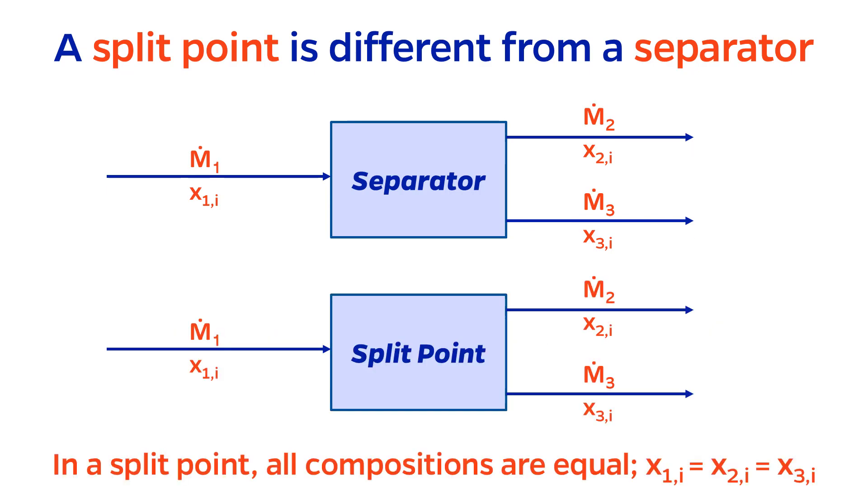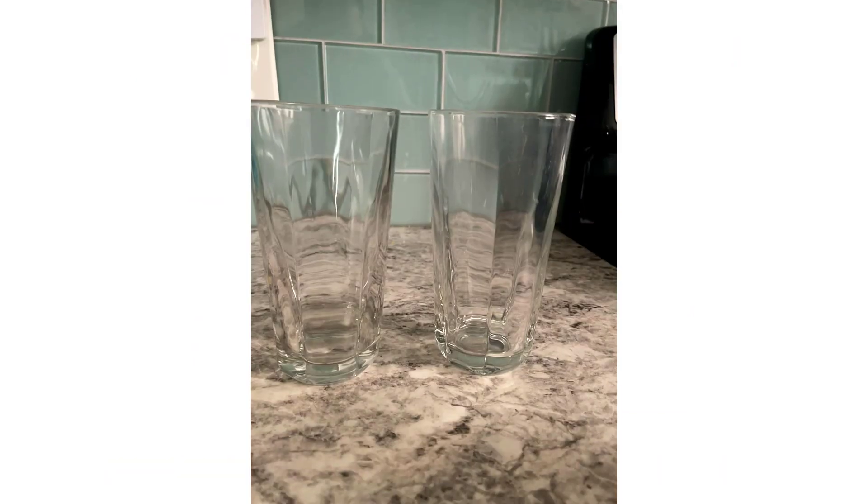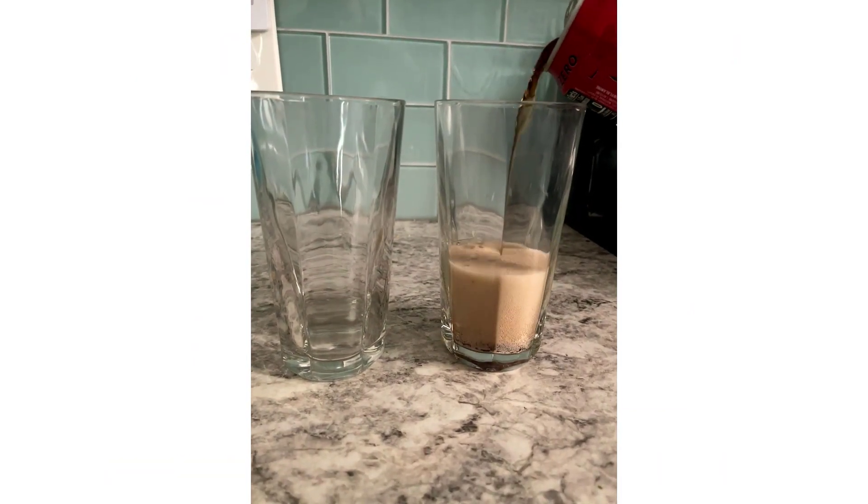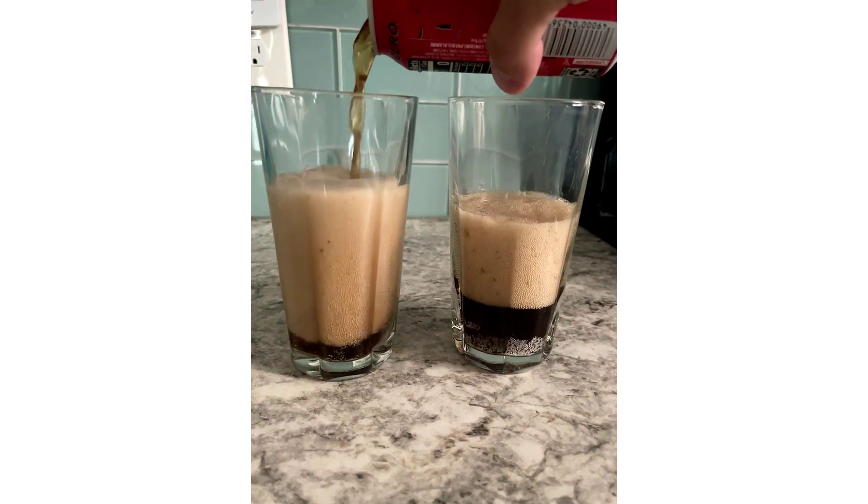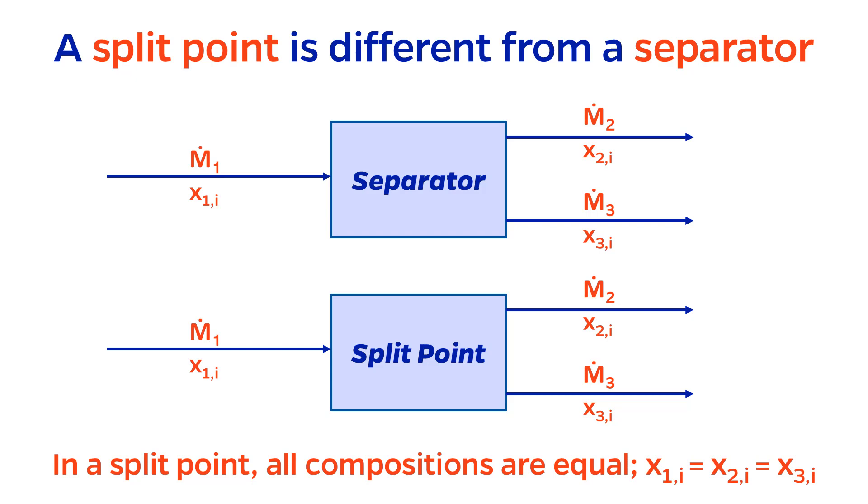In contrast, a split point does not alter the composition. I like to think about pouring a soda into two cups. A sip from either cup would taste the exact same, because the composition is the same. Therefore, the composition variables of the outputs can automatically be set to equal the composition variables of the input.